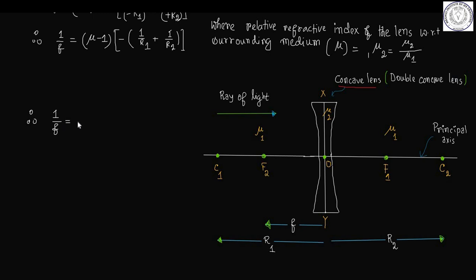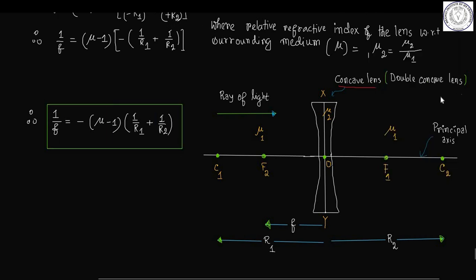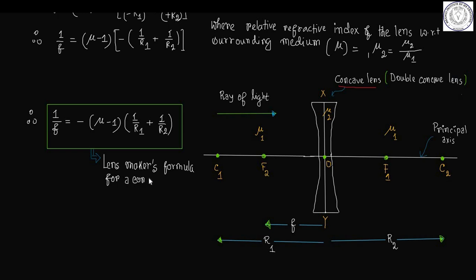We get the Lensmaker's formula with sign convention for a concave lens as 1 by f equals minus mu minus 1 into 1 by R1 plus 1 by R2. This is the Lensmaker's formula for a concave lens with sign convention.